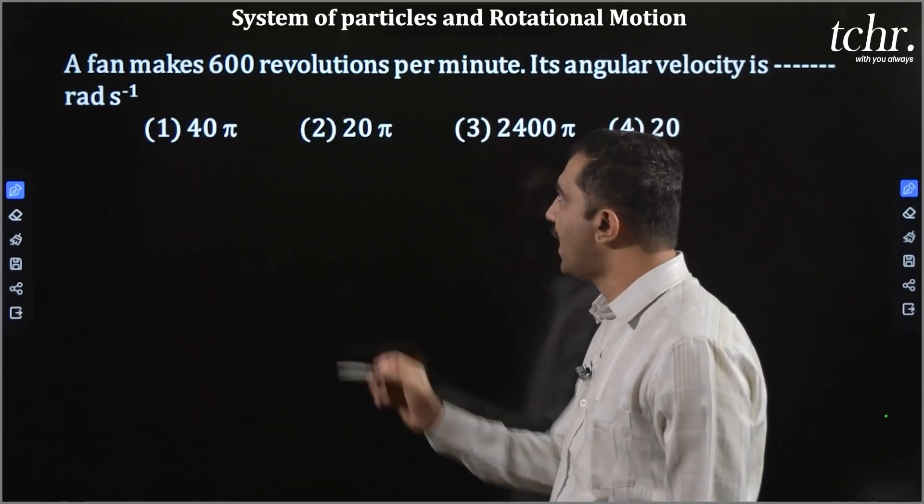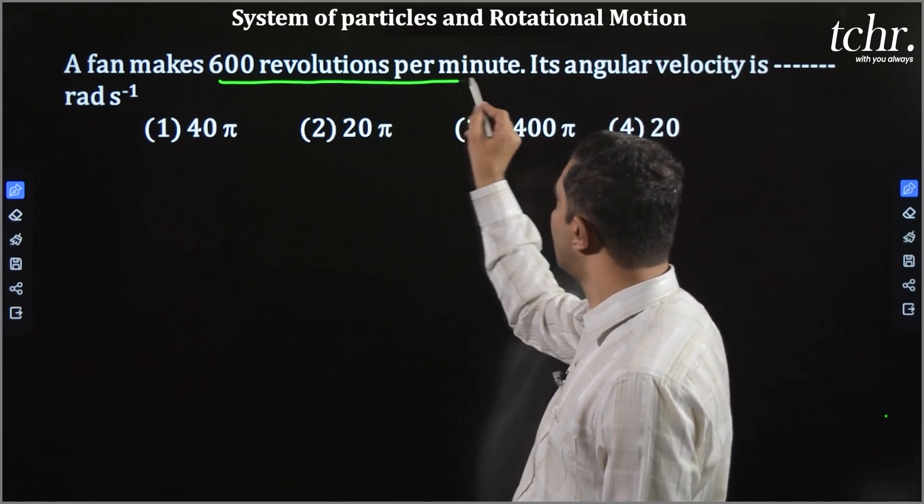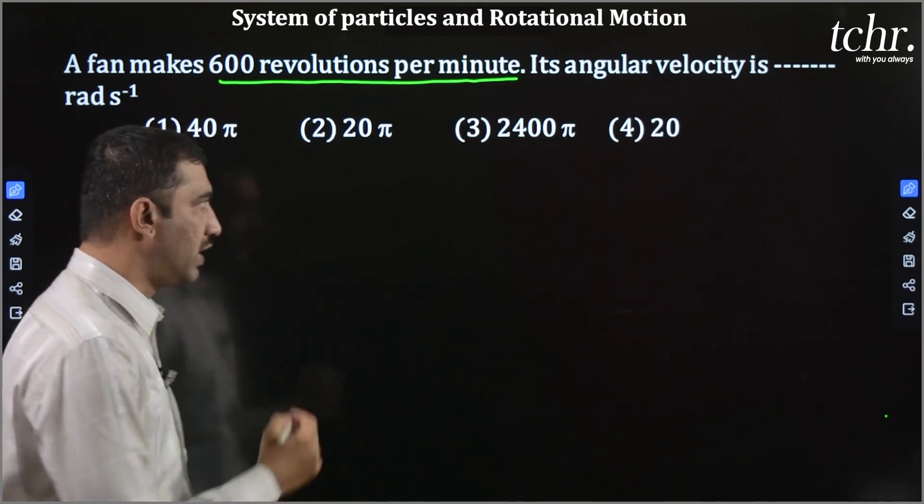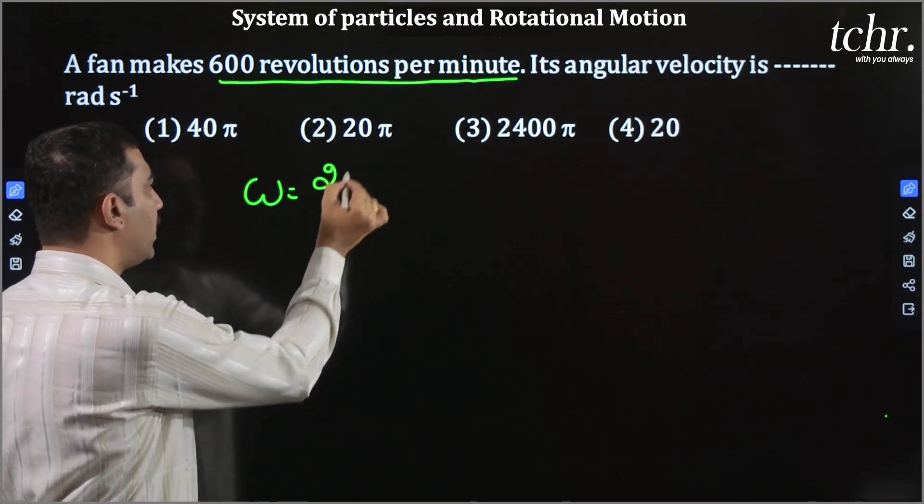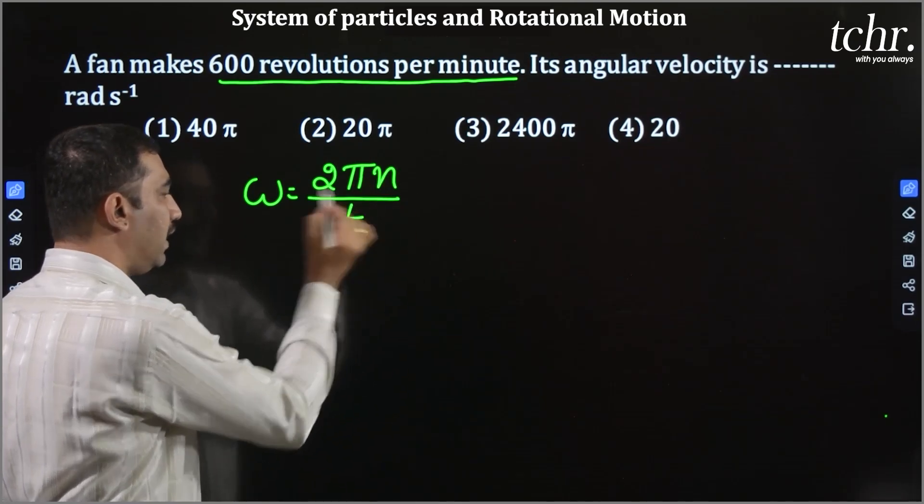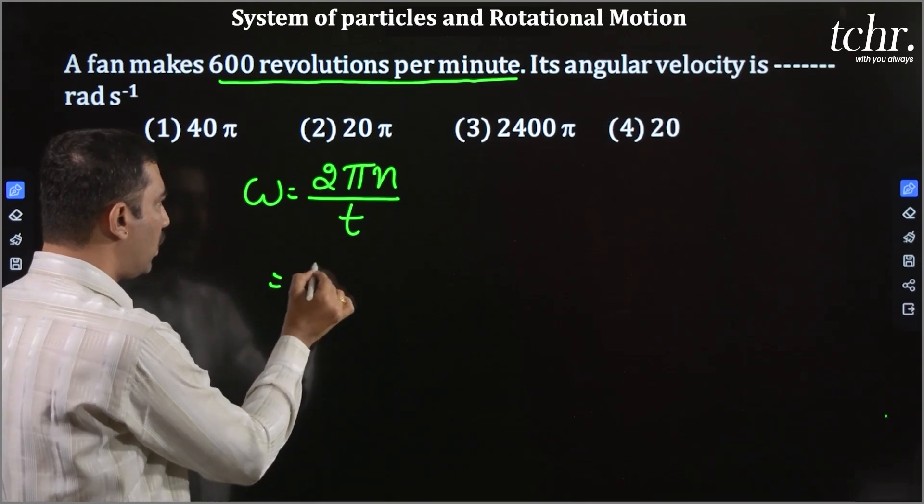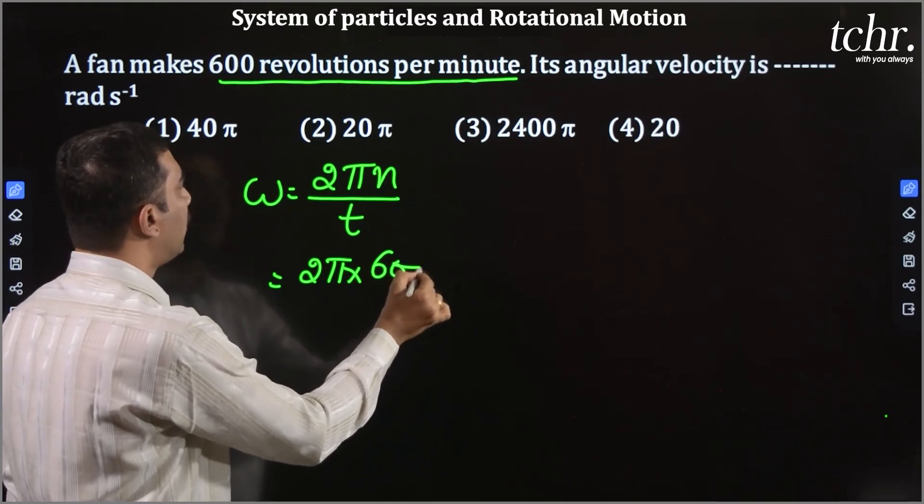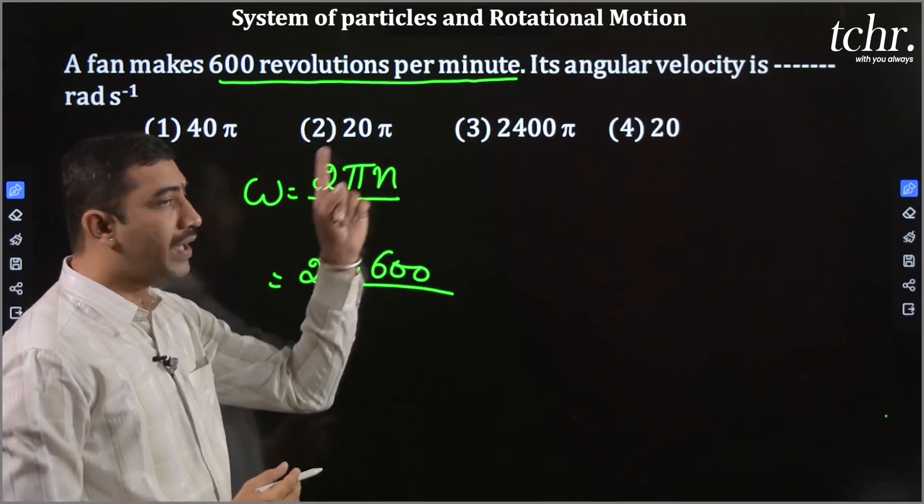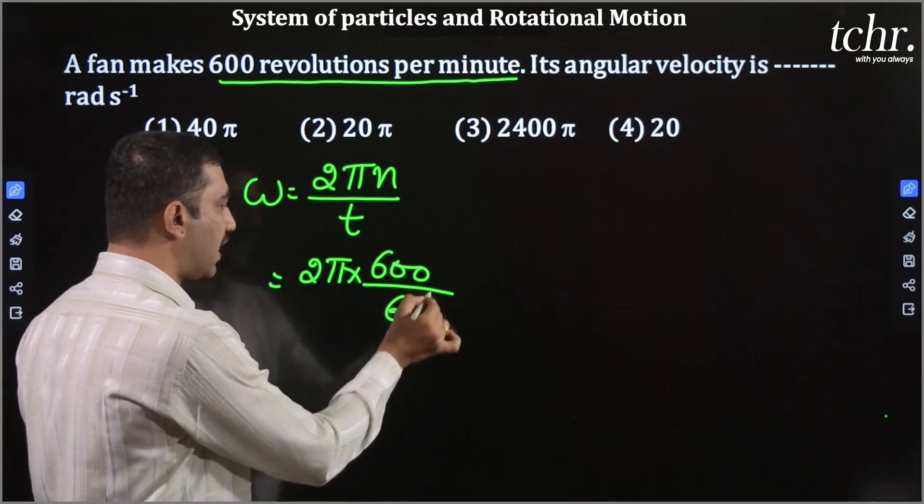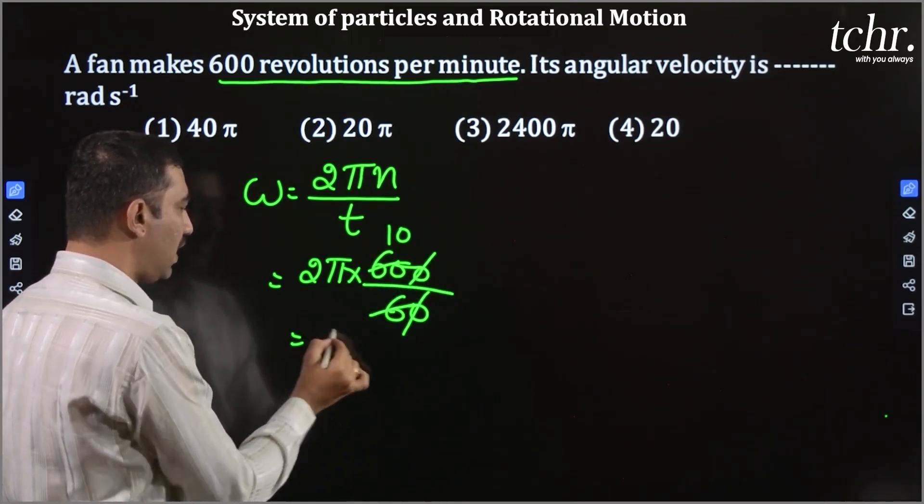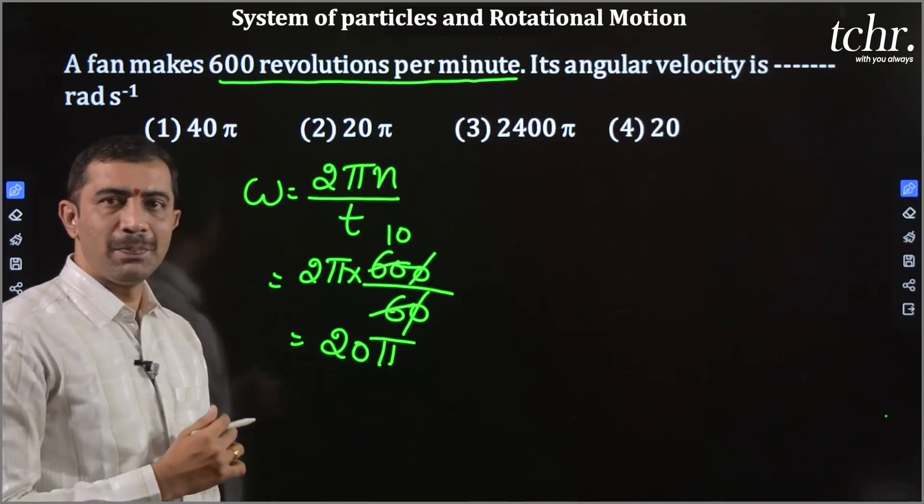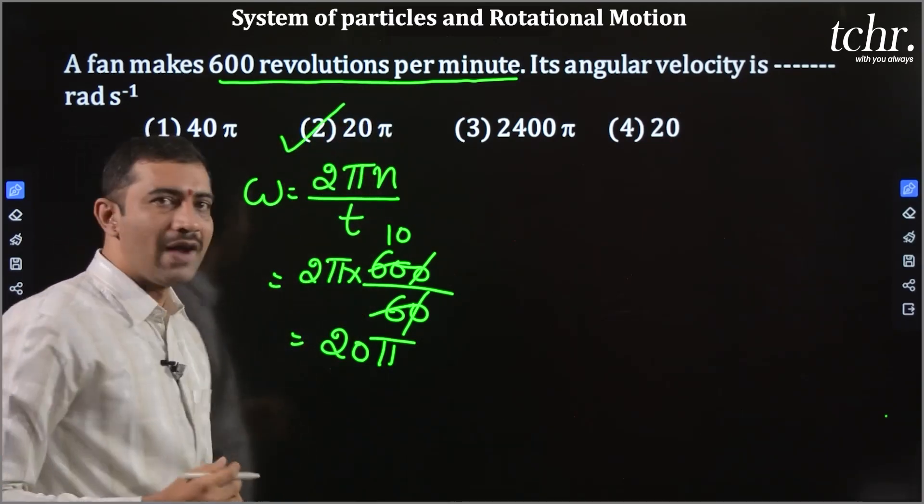Look into this one. A fan makes 600 revolutions per minute. Angular velocity needs to be found. Just now we derived it. It is 2n pi by t, angular velocity which is equal to 2 pi. How many revolutions it is doing? 600 revolutions. 600 revolutions per minute. Time is 60 seconds. So, it gets cancelled with 10. So, the total amount of angular velocity is 20 pi radian per second is the unit which you have it in option 2.